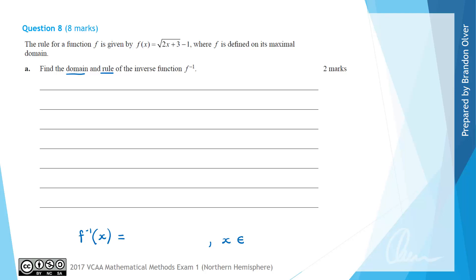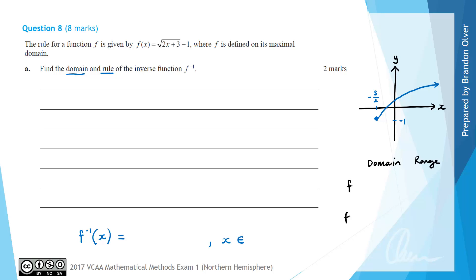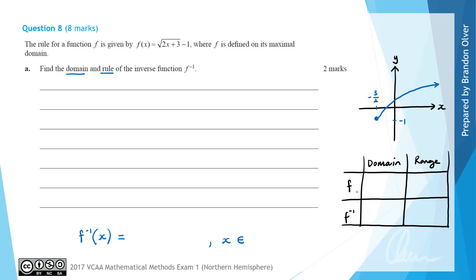Before we find the rule and the domain of the inverse, I'm going to start by sketching a graph of the original function f(x). So f(x) is a square root graph and it is going to have an end point at negative 3/2 comma negative 1. From the graph we can see the domain of f would be from x equals negative 3/2 to infinity, and the range would be from negative 1 to infinity.